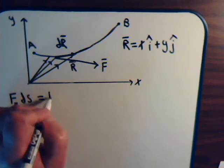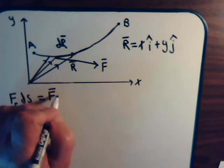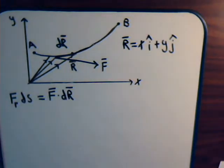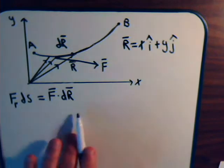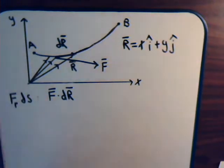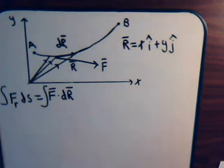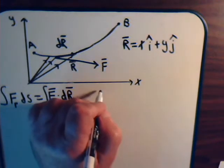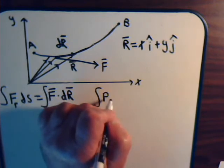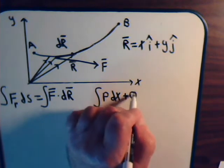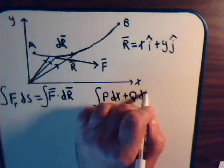That would equal f dot dr. And this is the general expression, then, for a line integral. This integral would equal this integral. Or, as you see in a moment, another way of expressing the line integral is p dx plus another different quantity q times dy.